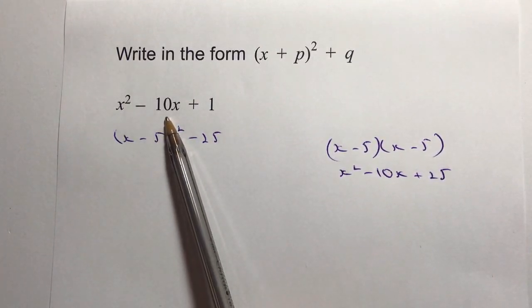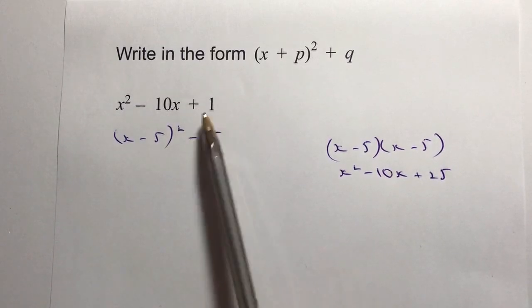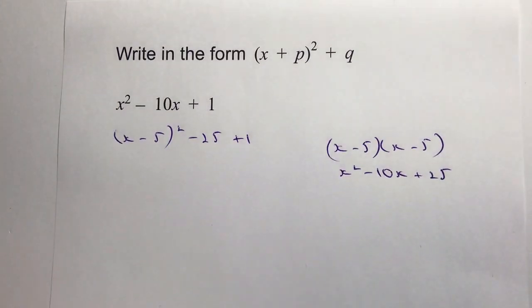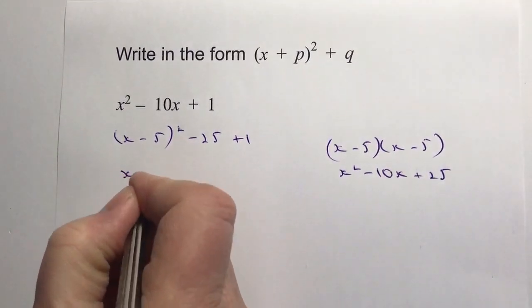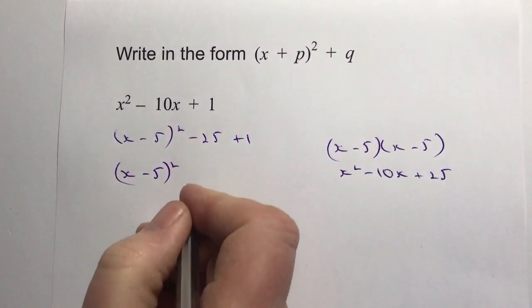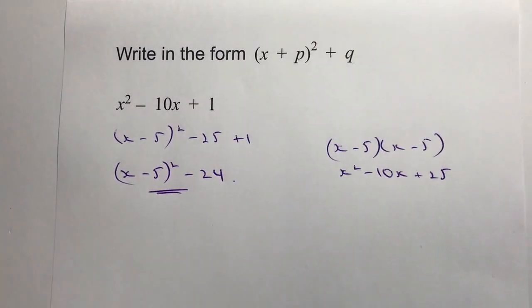That means that this, when I work it out, will be exactly the same as the first two terms. The only thing I've got then is to get rid of this +1, so if I plus 1 onto there and then write it out by gathering up the numbers, I get (x - 5)² - 25 + 1, which is -24. That's the answer.